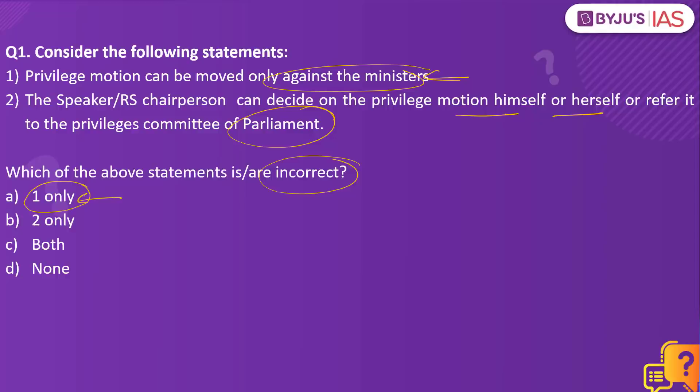When you look into the second option, it is right. When a member of the parliament voices a concern about another member by putting in a notice of privilege motion, this goes to the speaker in the Lok Sabha or to the Rajya Sabha chairperson. It is they who evaluate if the member has violated the privileges of the parliament. And if they feel it has to be referred to the privileges committee, they will refer it there as well. So the second option is the right option.